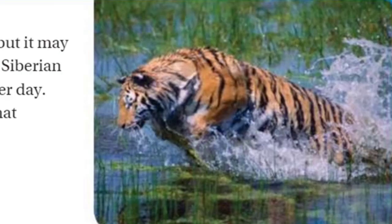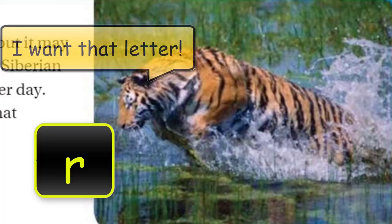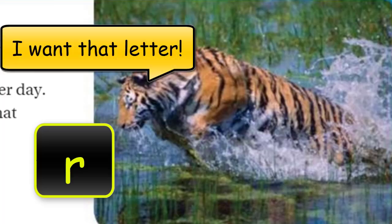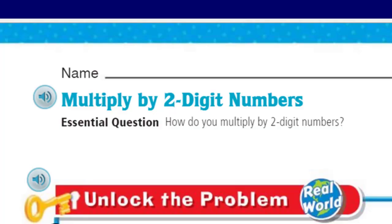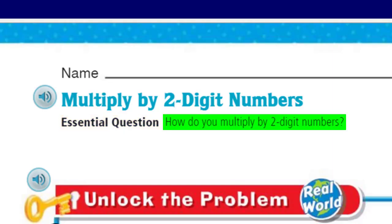I bet not as fast as this tiger over here. Look at this guy pounce. I always picture seeing tigers up kind of like in the forest area hunting. He must be moving in on something. I bet that tiger is going to have something to do with our problem. Now, what's our essential question? This is our purpose, our learning target. What we should learn today is how do you multiply by two-digit numbers?